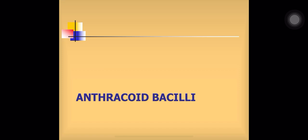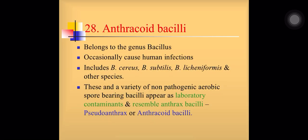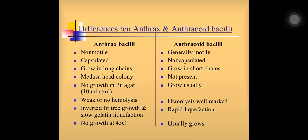Anthracoid bacilli refers to all other bacilli in the genus Bacillus other than Bacillus anthracis. They also cause human infections and include Bacillus cereus, Bacillus subtilis, Bacillus licheniformis, etc. Many act as laboratory contaminants and may resemble anthrax bacilli. They are also known as pseudo-anthrax or anthracoid bacilli. There are several points of difference between anthrax bacilli and anthracoid bacilli — properties like non-motile, capsulated, medusa head appearance are not present in anthracoid bacilli.